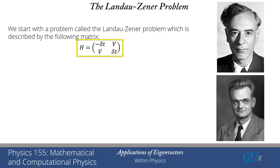So it's just a two-by-two problem. We have delta times t — t is time, starting at minus infinity and going to plus infinity. Delta is just a number, and v is also a number. We're going to look at the evolution of this problem as a function of time as t goes from minus infinity to plus infinity.